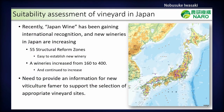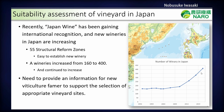My other interest is vineyard and Japanese wine cultivation. Recently, Japanese wine has been gaining international recognition, and new wineries in Japan are also increasing. There are 55 structural reform zones — meaning easy-to-establish new winery zones — now in Japan. This purple point shows the distribution of the structural reform zones, and new winery numbers have increased from 160 to 400 over about 25 years. There is a need to provide information for new viticulture farmers to support the selection of appropriate vineyard sites.